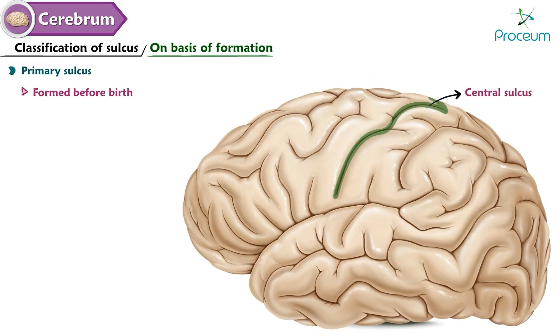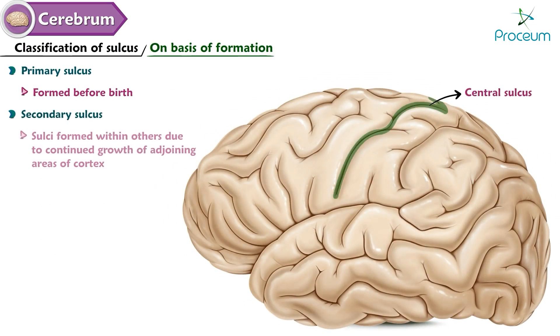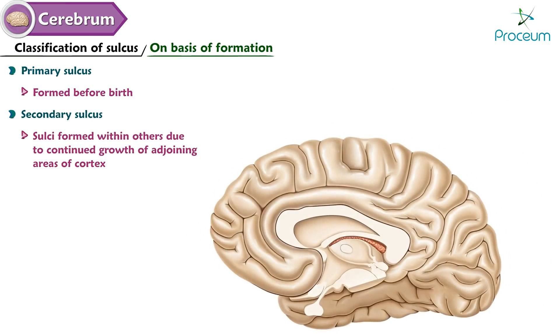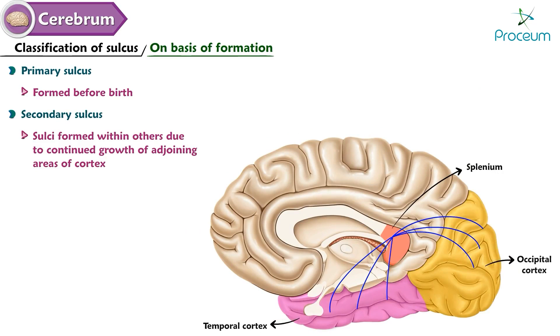On the basis of formation, there are two types. A primary sulcus is formed before birth — for example, the central sulcus. A secondary sulcus is formed within others due to the continued growth of adjoining areas of cortex — for example, the splenium of the corpus callosum conveys a large number of fibers from the temporal and occipital cortices to the parieto-occipital sulcus, creating a number of axial and limiting sulci within its wall.